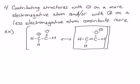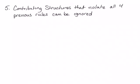The final rule is that contributing structures that violate all four of the previous rules can be ignored — they don't need to be written. If they violate all four previous rules, they're so unstable and such a minor contributor to the overall resonance hybrid that it's not worth even showing them.